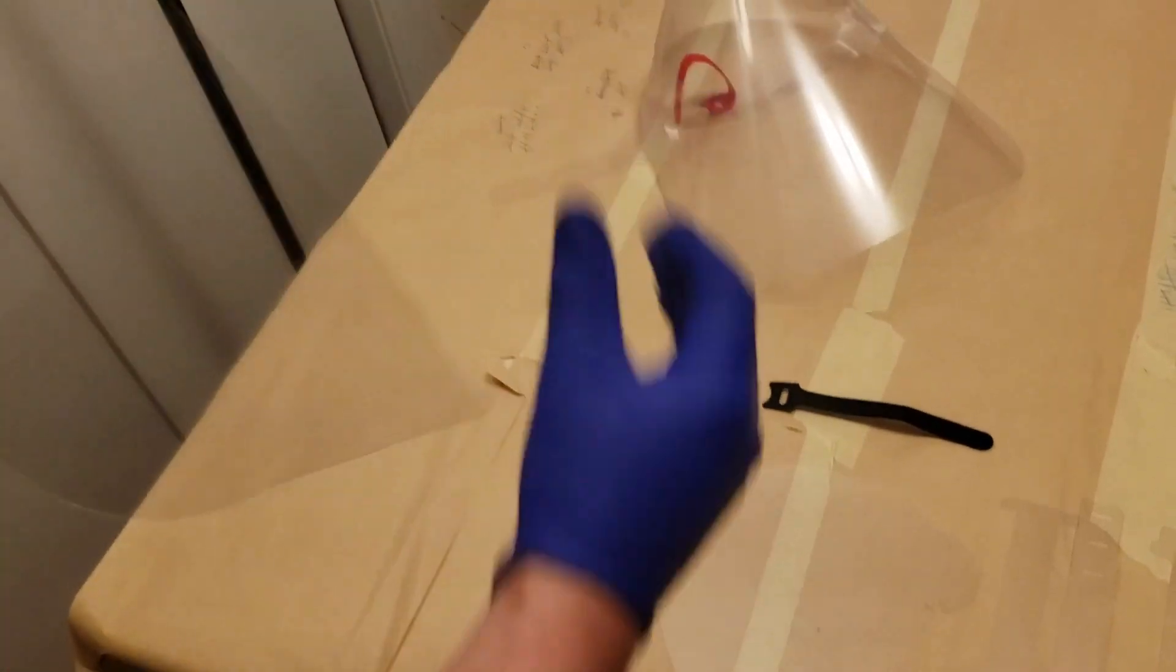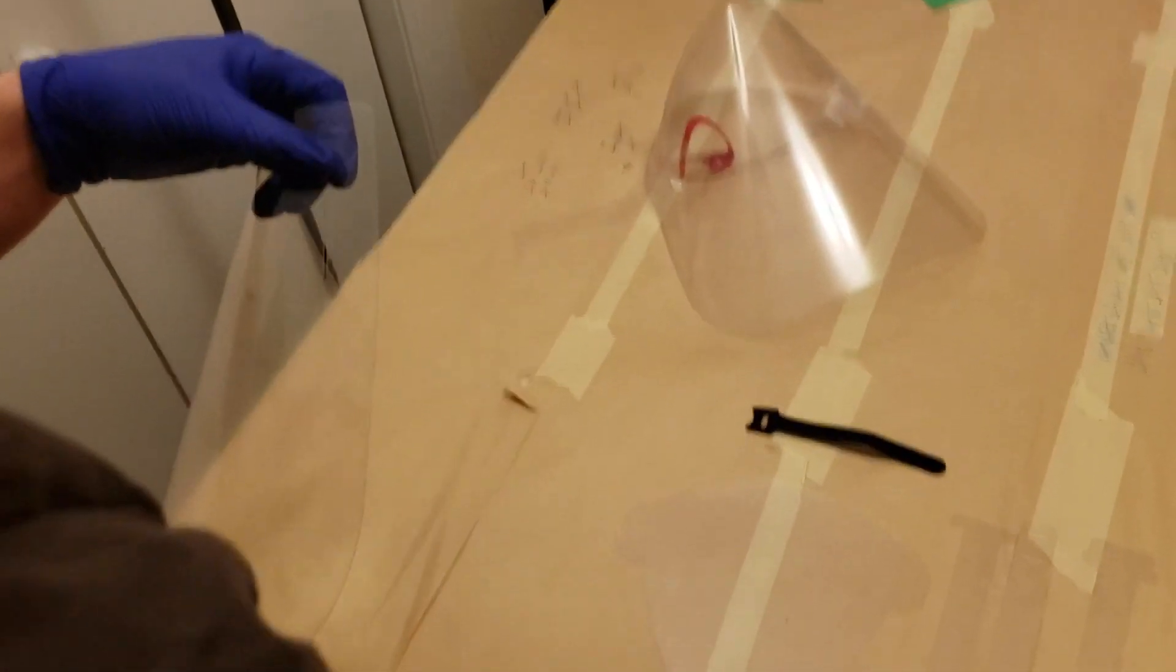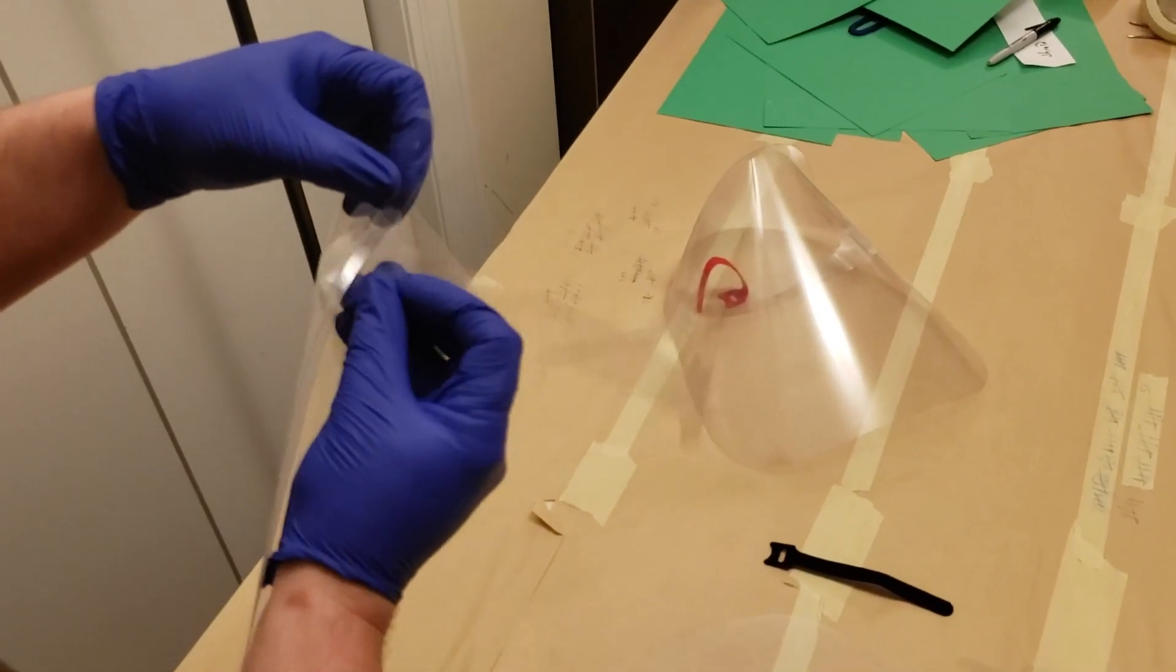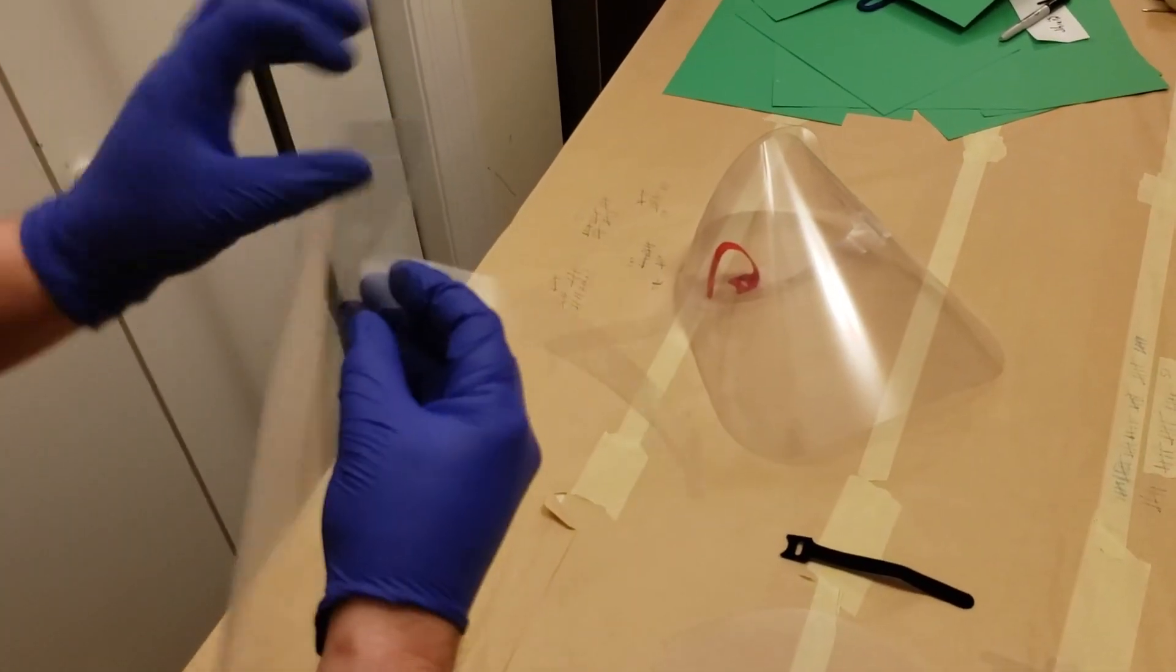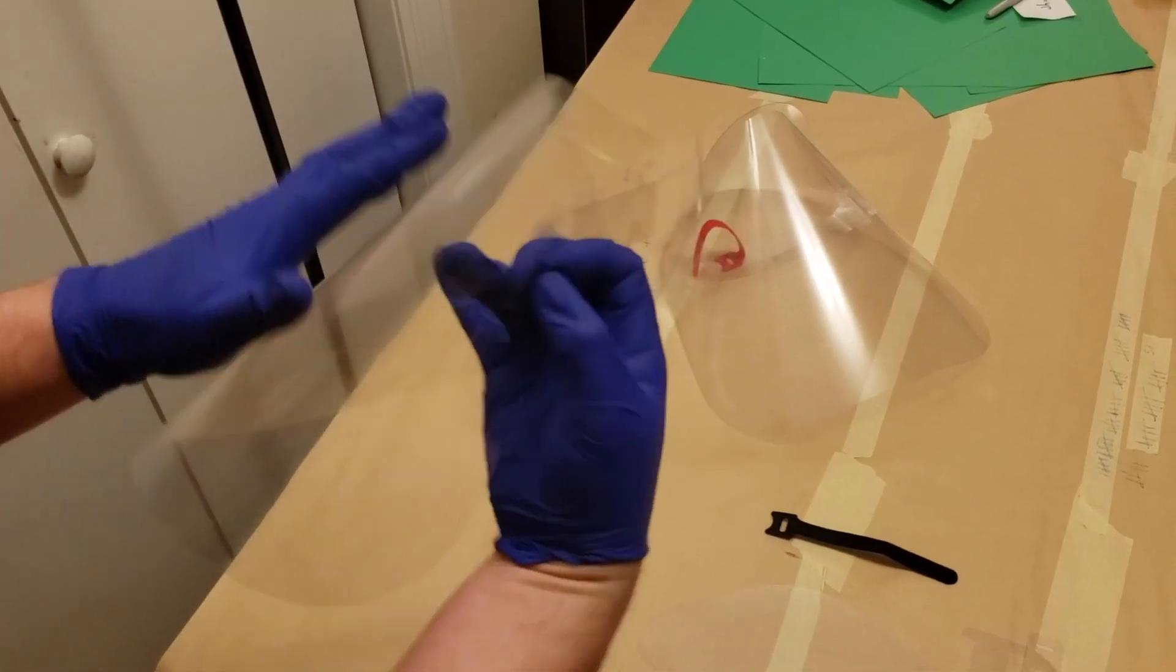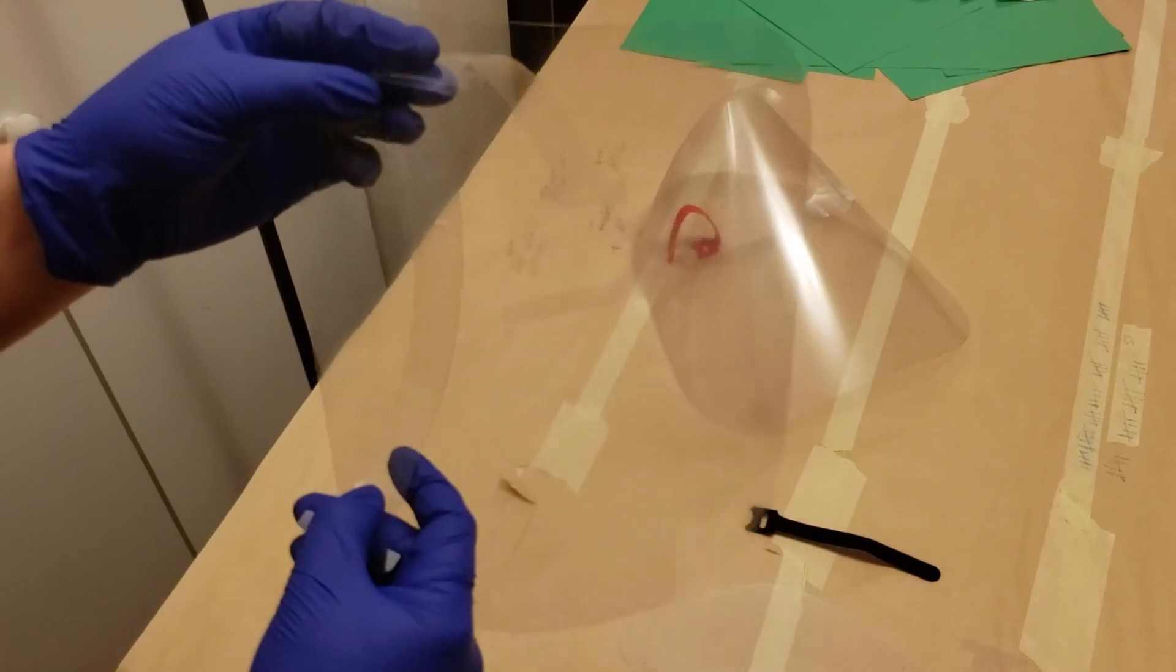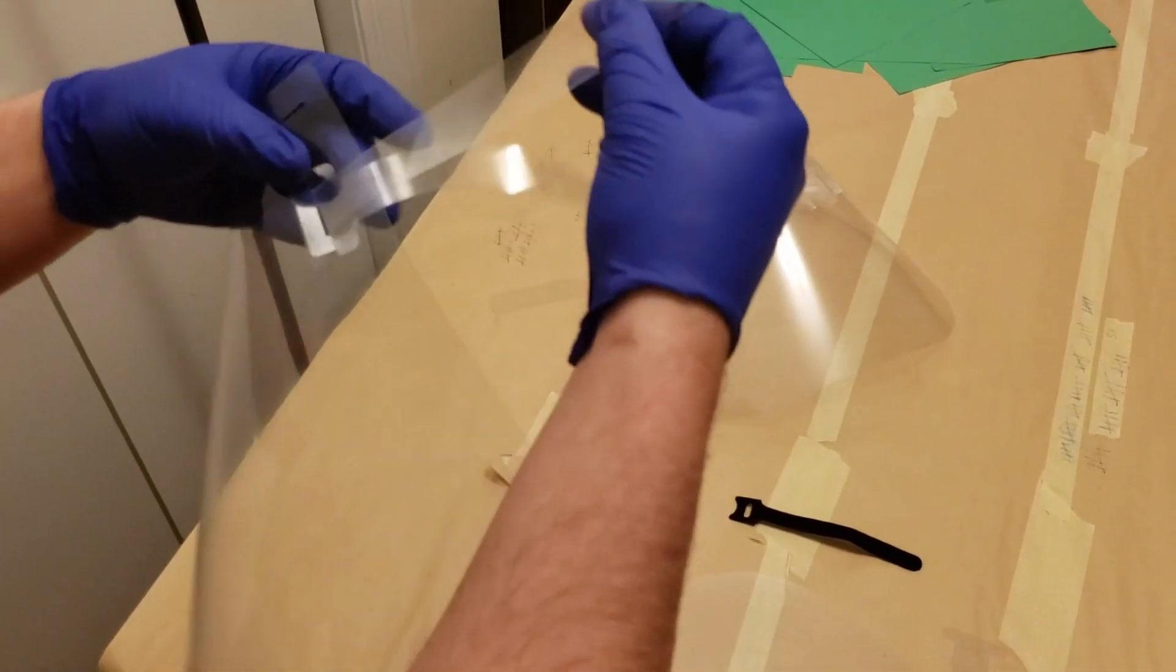So here's how you make it. You take the front shield and you take your front head strap and you just insert that like that. This is the front of the mask and this is the inside.